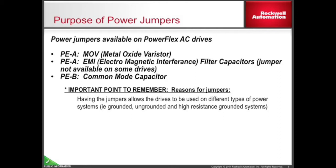There are typically two power jumpers labeled PEA and PEB. The PEA jumper is associated with the MOV or Metal Oxide Varistor provided on the drive. In some frame sizes, it is also associated with the installation of the EMI filter capacitors. The PEB jumper is always associated with providing a ground path with the common mode capacitors. The remainder of this video will help you understand the purpose of these devices and when it is appropriate to install the jumpers associated with these devices.